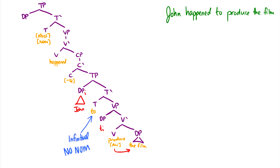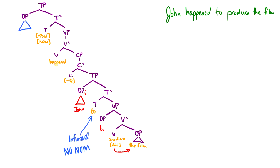Instead, John still needs nominative case, so it moves up an entire TP to get nominative case from the previous T — the T that gives its morphology to 'happen' to make it 'happened.' So now we end up with John at the top, and we have two traces below.